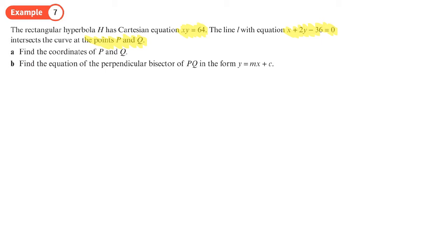We're going to do a sketch. We know that a rectangular hyperbola looks like this. This has equation xy equals 64, and we've got a line that intersects at the points P and Q.